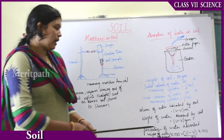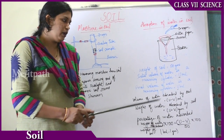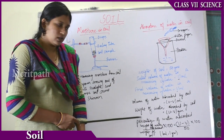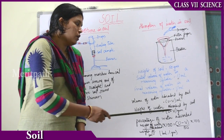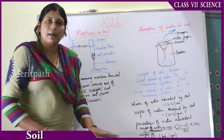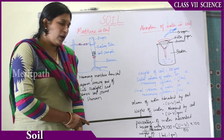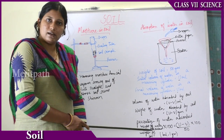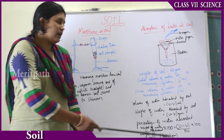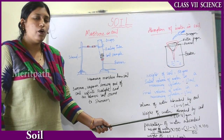If we want to calculate the percentage of water absorbed, we need the measurement in grams. So we convert ml into grams — volume is converted into weight. The weight of water absorbed by the soil is U minus V grams, because 1 ml is equal to 1 gram, so the amount remains the same. We convert volume into weight because calculating the percentage requires grams or kilograms. The amount remains the same since 1 ml equals 1 gram.